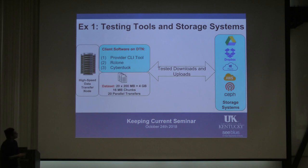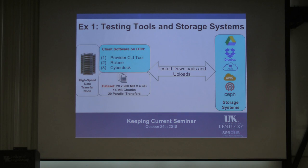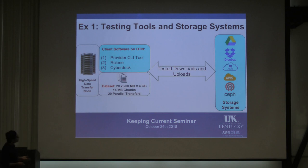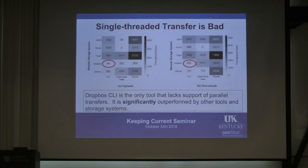We tried three tools: Rclone and CyberDuck, which are generic tools — meaning you can use them to send data to any provider, like a generic interface to move data between different cloud providers and your local machine. The first one, the provider CLI tool, was developed for a particular cloud storage system, so you'd expect those to be tailored to the particular cloud provider. That was one of our hypotheses.